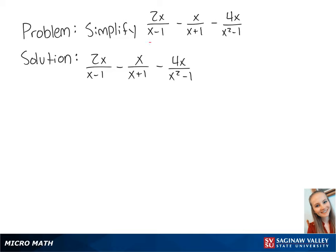Let's subtract these rational expressions. First, we're going to want to find a common denominator. x squared minus 1 is equal to x plus 1 times x minus 1.